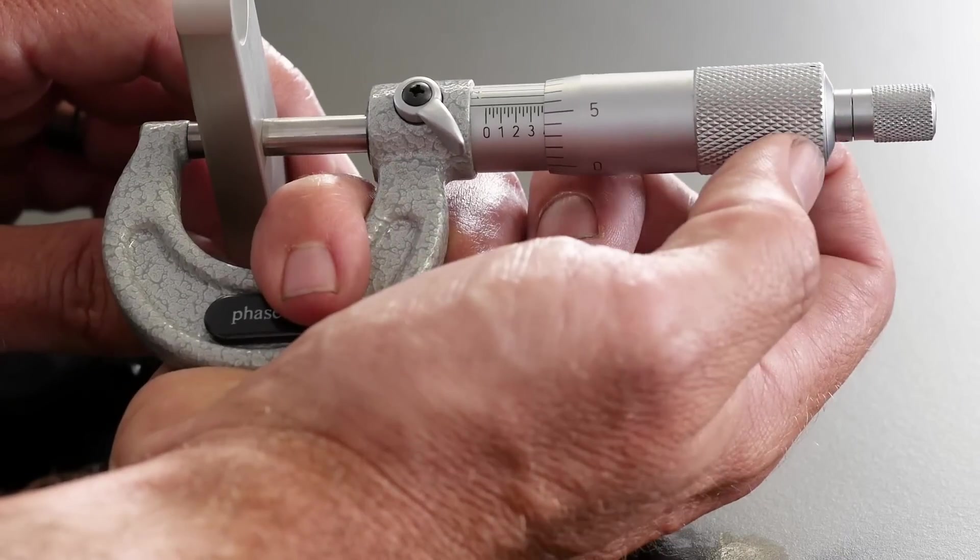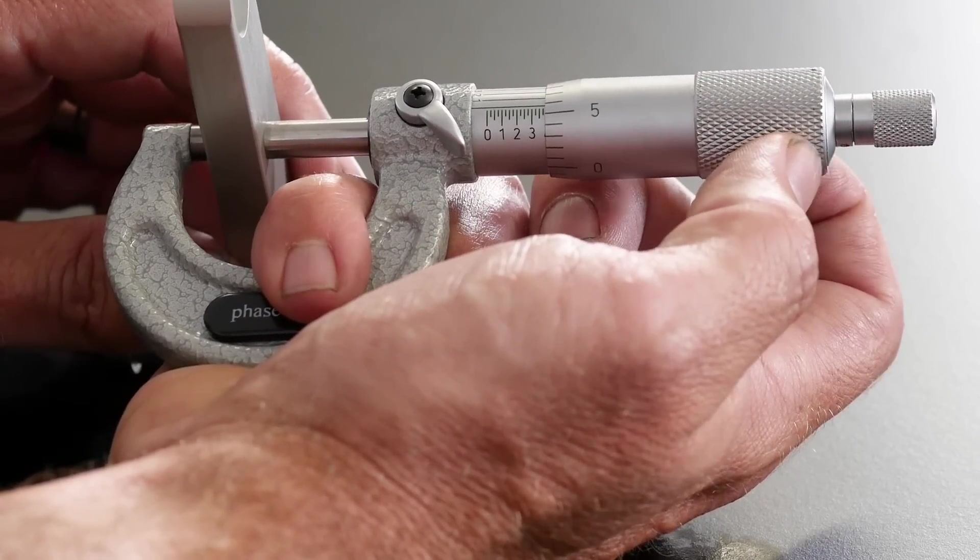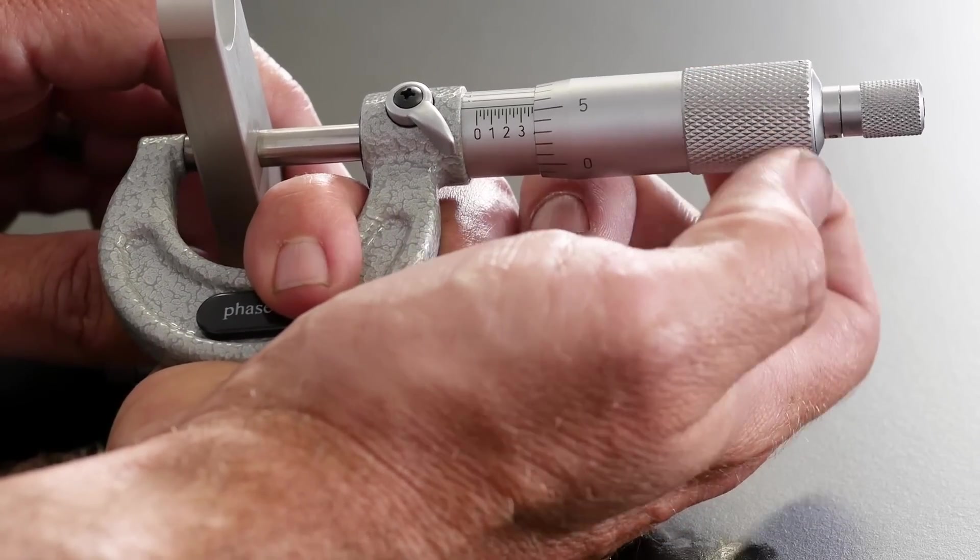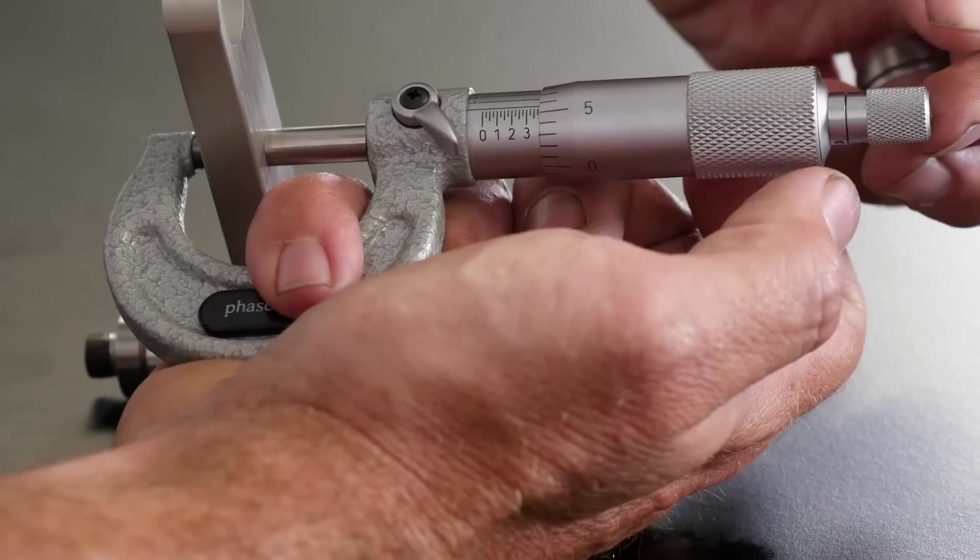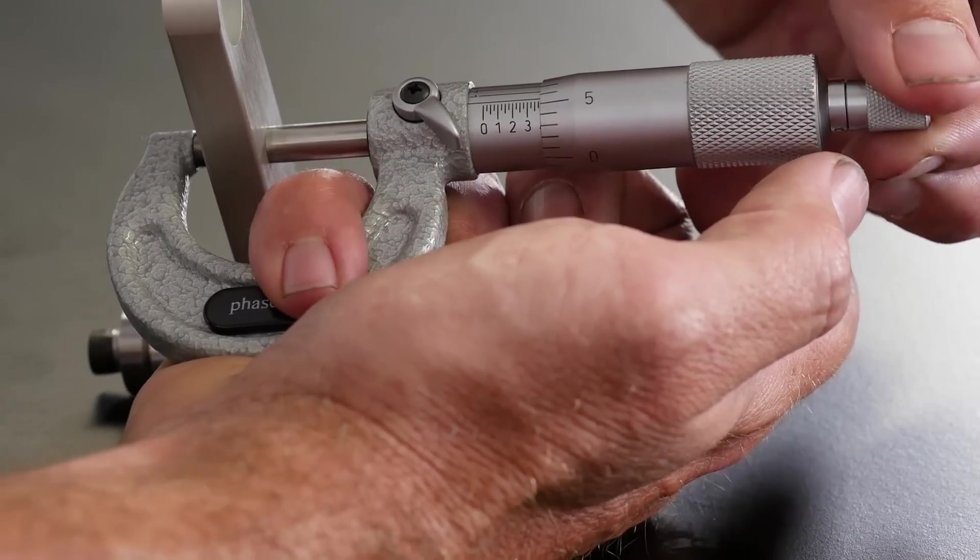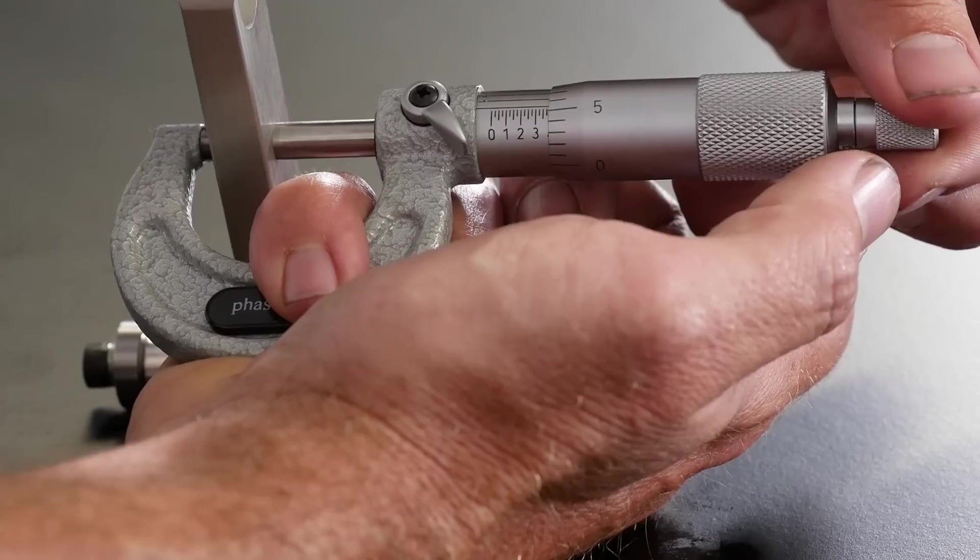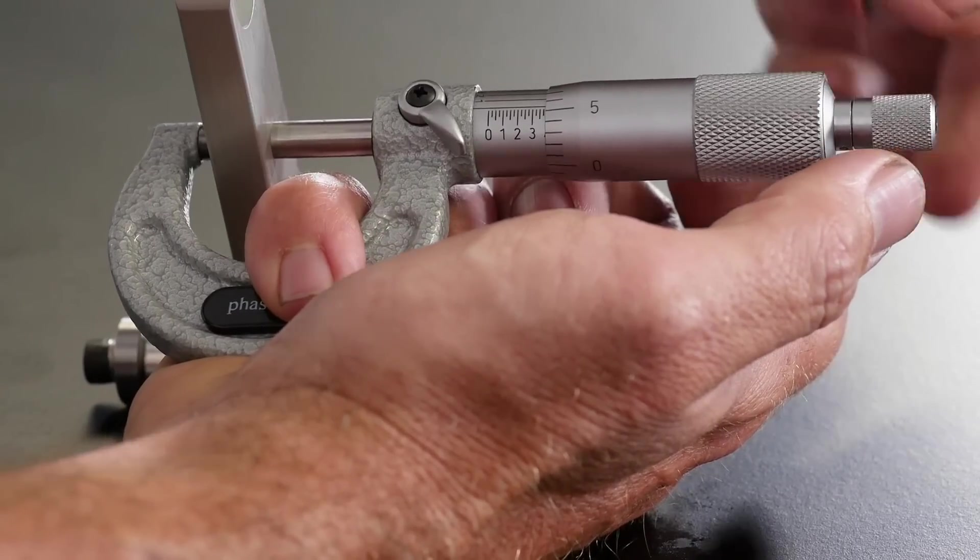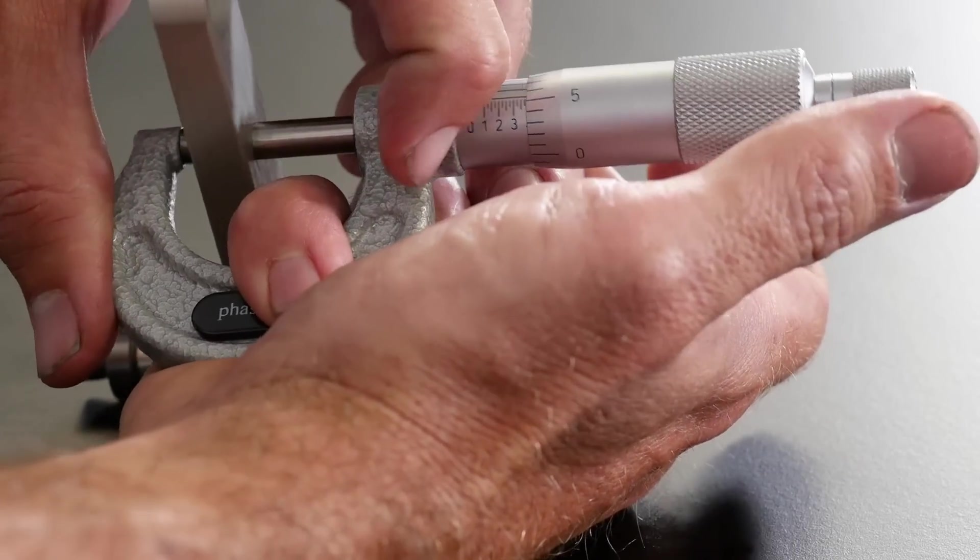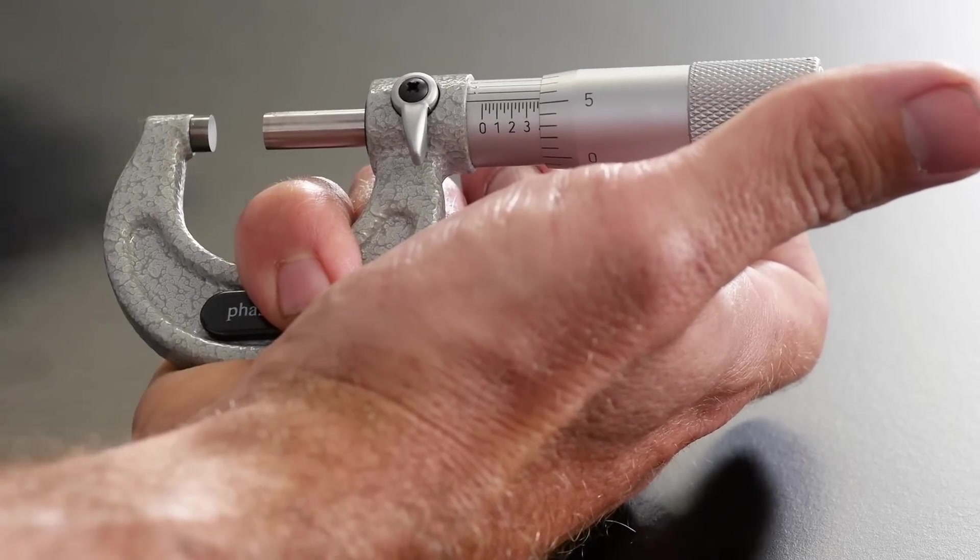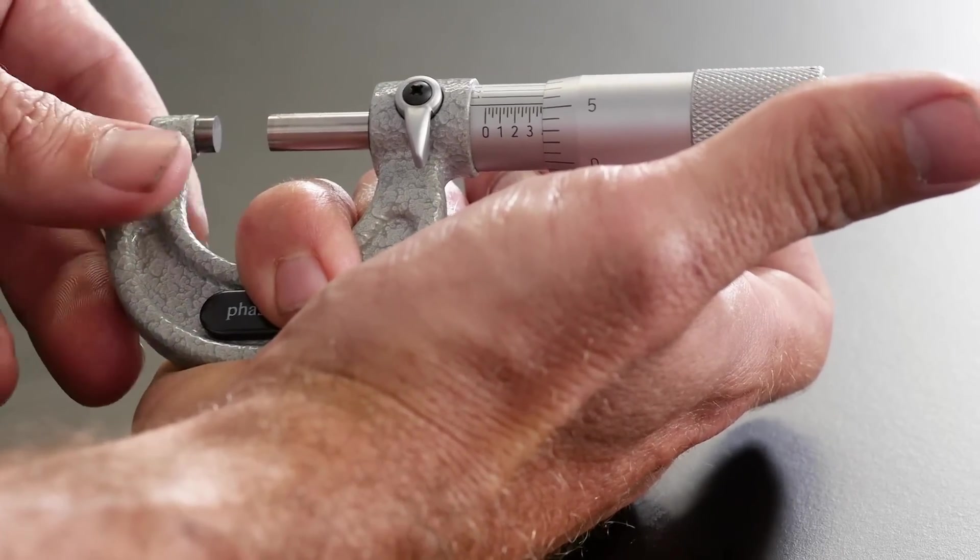We can make coarse adjustments by using the thimble, but when we get to a point where we're actually ready to make a measurement, it's important to use the ratchet stop. And this prevents us over tightening the micrometer. So once we've got the micrometer tightened and it's stopped moving, we can then lock it and we can remove the component that we're measuring. Let's now have a look at how we can calculate or measure the component that we've just put in our micrometer.